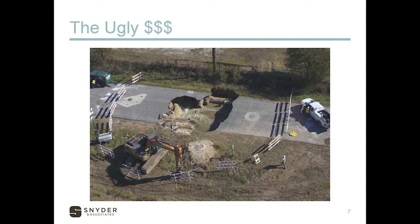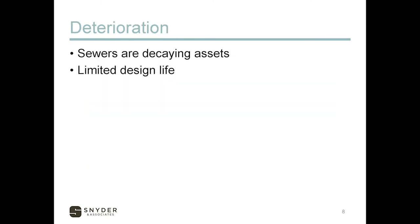Now we've seen some examples of failures — let's talk about what causes them. Sanitary sewers are progressively decaying from the day we put them in the ground. Every sewer is different based on conditions, pipe material, and type, but they are a decaying asset. They're never going to be as shiny and clean as the day you put them in. Many systems, especially in our region of the country, are reaching the end of their useful life.